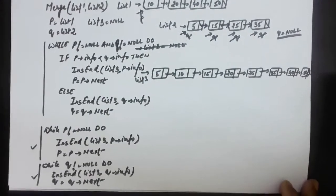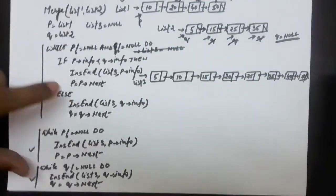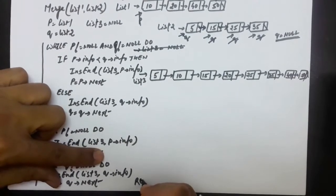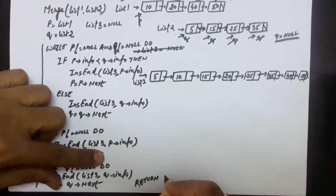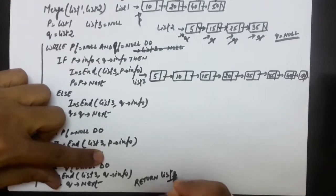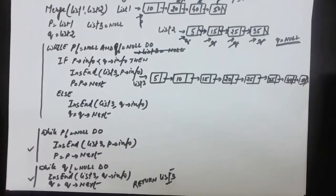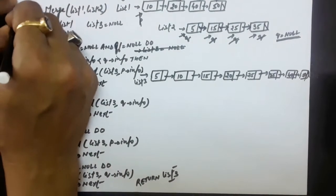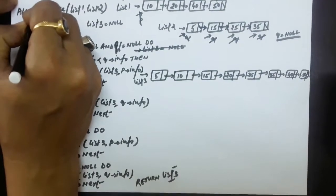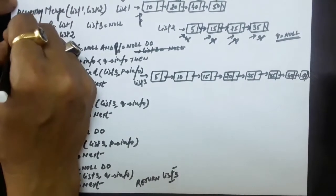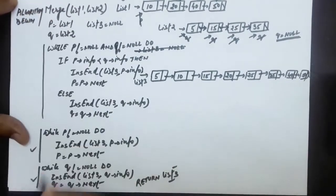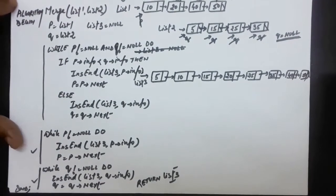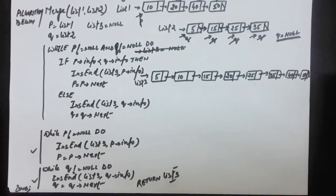After exiting from the while loop where comparisons were made, if the first linked list has remaining nodes, that loop works and the other does not. If the second linked list has remaining nodes, the other loop works. So at a time, either of these two will work. This is the merge operation, and the answer linked list is list 3. As a last statement, we return list 3. This is the algorithm for the merge operation.